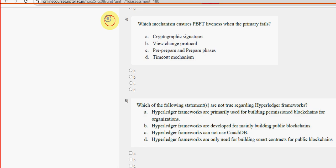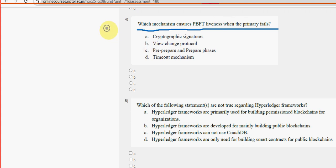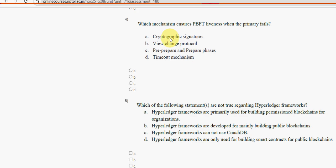Question four: which mechanism ensures PBFT liveness when the primary fails? Option B, the view change protocol, is the probable solution for question four.